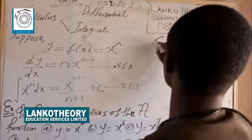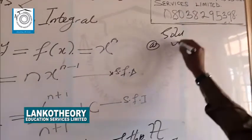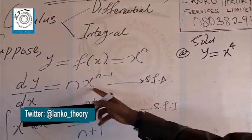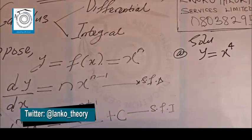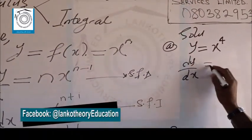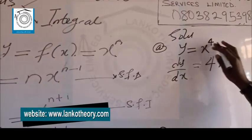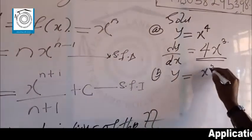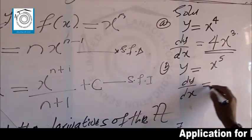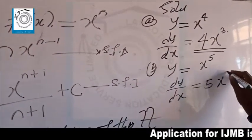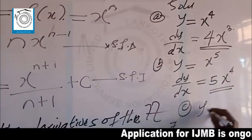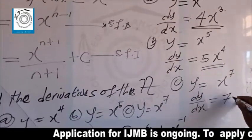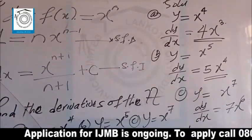Solutions. For the first one, Y equals S raised to power 4. From the general formula — if you have S raised to power N, dY/dS is N times S raised to power N minus 1 — we bring the power down and subtract 1. So dY/dS will be equal to 4 times S raised to power 4 minus 1, which gives 4S³. For B, Y equals S raised to power 5: bring the power down — dY/dS equals 5S raised to power 4. For C, Y equals S raised to power 7: dY/dS equals 7S raised to power 6.